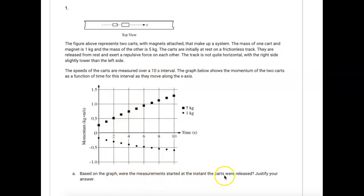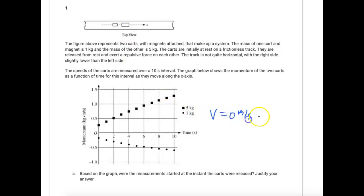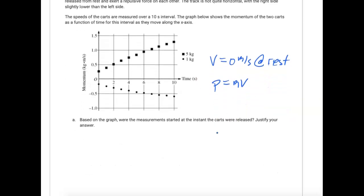Based on the graph, where did the measurement start — at the instant the carts were released? The carts are initially at rest, so when released, their velocity equals zero meters per second. Since momentum equals mass times velocity, if velocity is zero, momentum should be zero. Keep that in mind as we answer this — justify your answer.